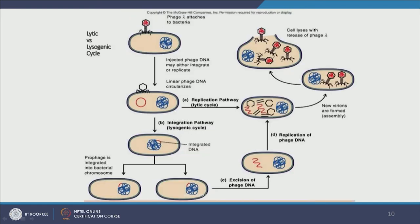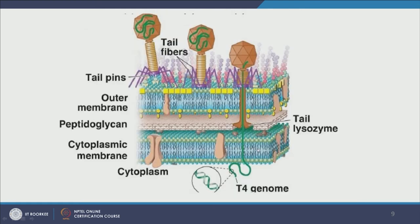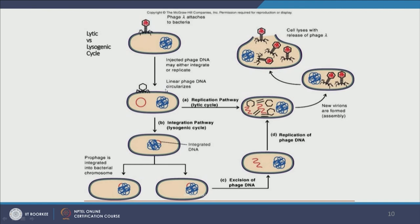Once the viral DNA is released into the bacterial cell — the chromosomal material of the prokaryote — the virus can undergo two pathways. In the lytic pathway, the viral DNA is transcribed, translated, and replicated; multiple copies of the genome and capsid proteins, tail fibers, and other structural proteins are assembled during the eclipse stage. Then in the maturation stage they assemble, lyse the cell using lysozyme, break the outer membrane, and escape.